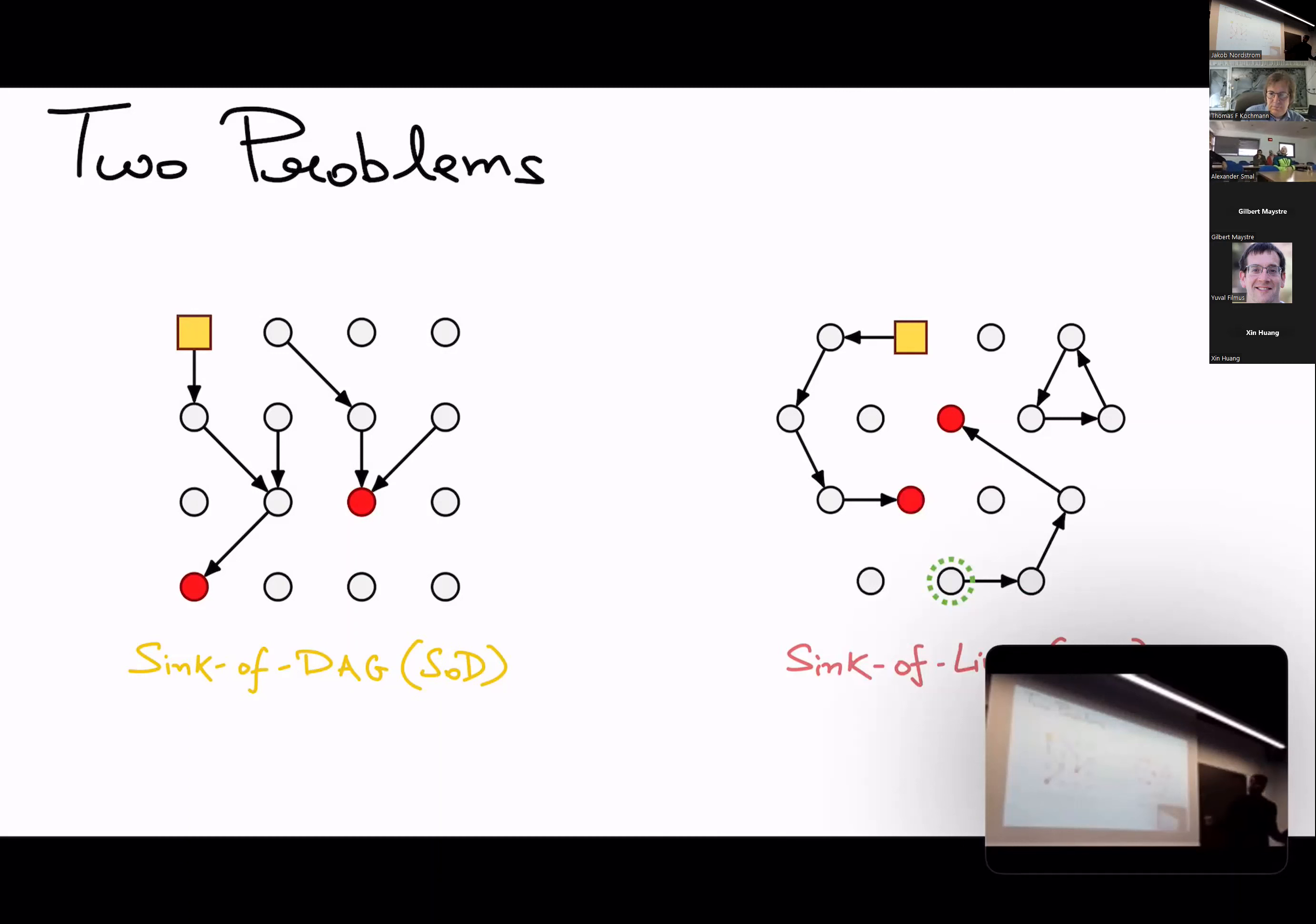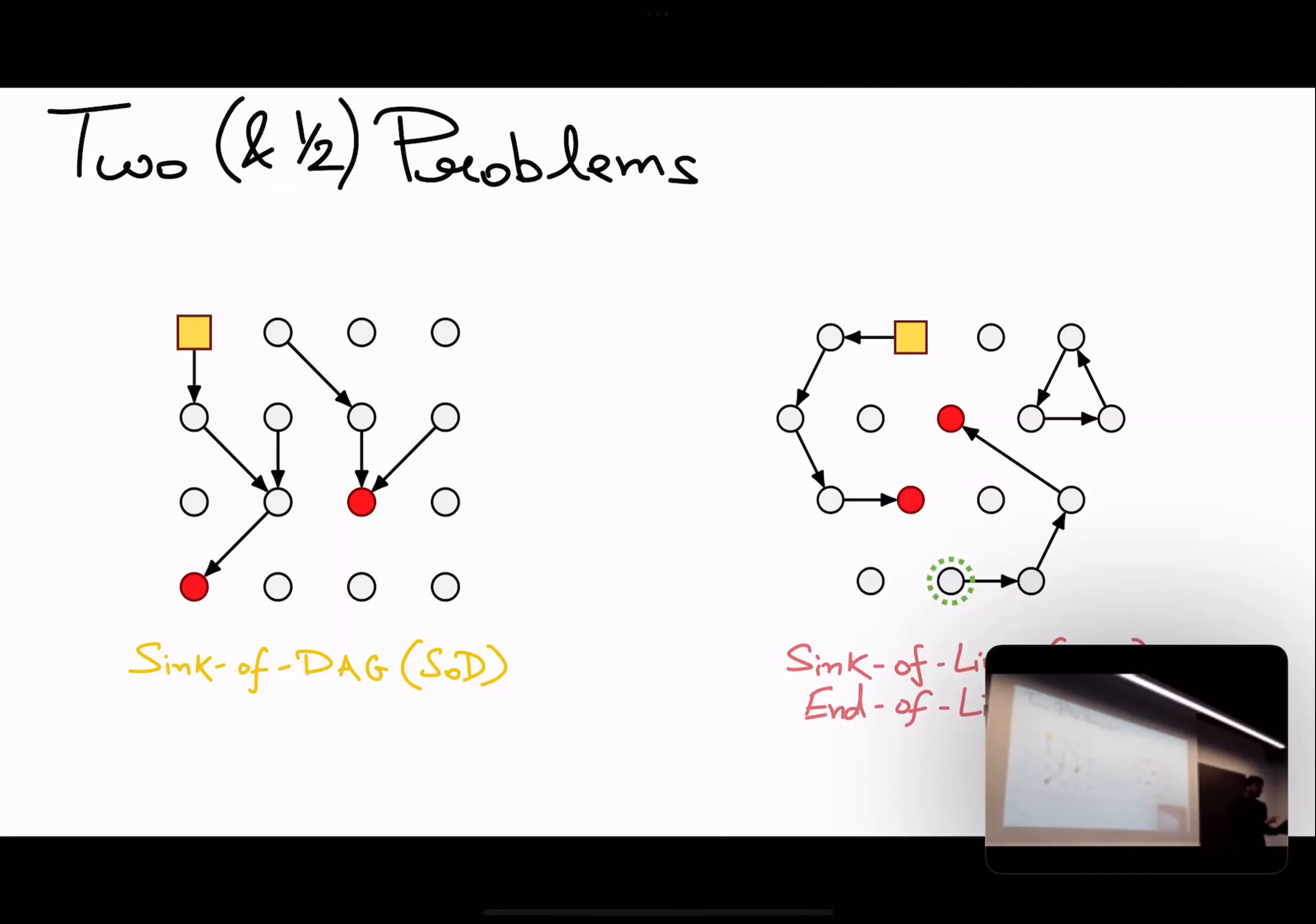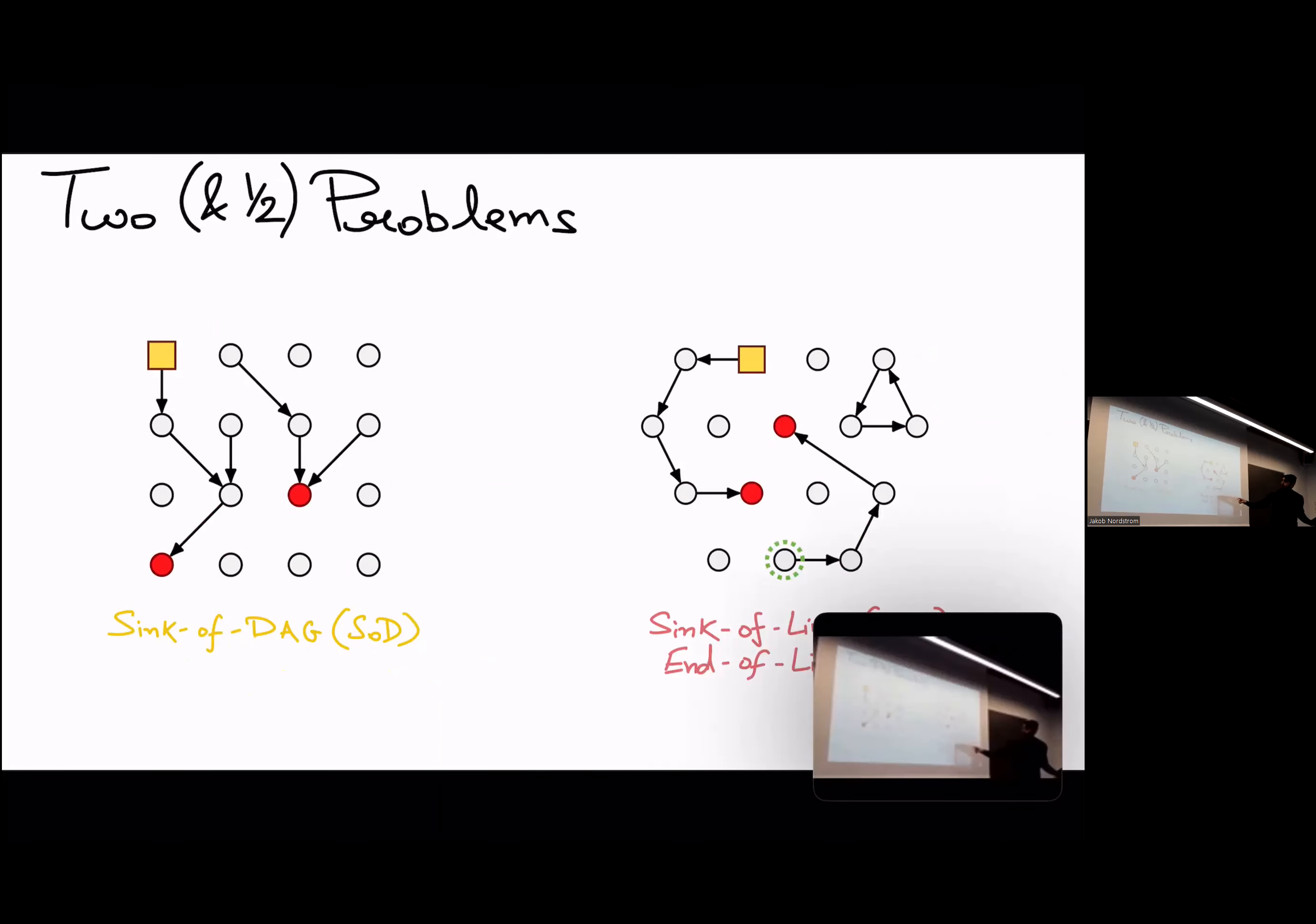The other problem is called end of line. In this problem, you don't have the grid structure, so edges could be going anywhere. But you do have some distinguished source. But what structure you do have is that you have reversibility of edges.